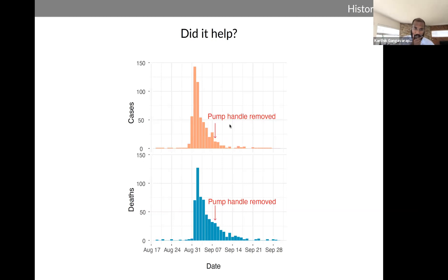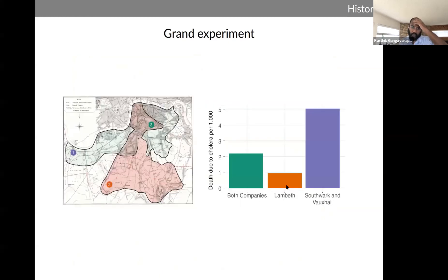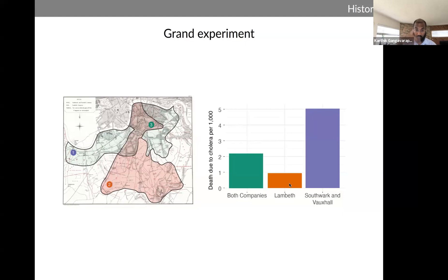Snow published these findings in a paper called 'On the Mode of Transmission of Cholera,' and expanded that work with another experiment he termed the grand experiment. Districts in London were supplied by two water companies: Region 1 by the Southwark and Vauxhall company, Region 2 by the Lambeth company, and Region 3 was a mix. He stratified the population by water supply and found the area supplied by Southwark and Vauxhall had a mortality rate roughly five times higher than Lambeth, because Lambeth had moved their water intake upstream of where sewage was dumped. This confirmed that cholera was transmitted via water.